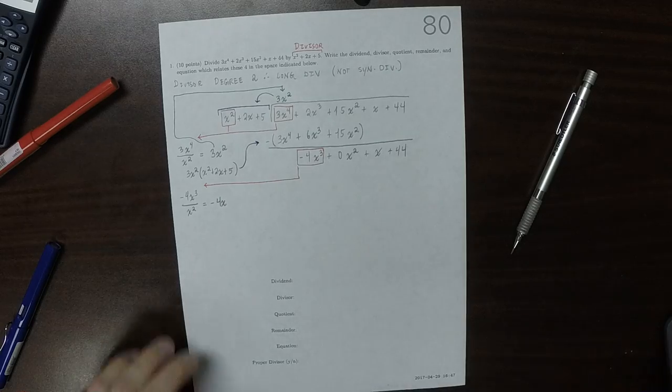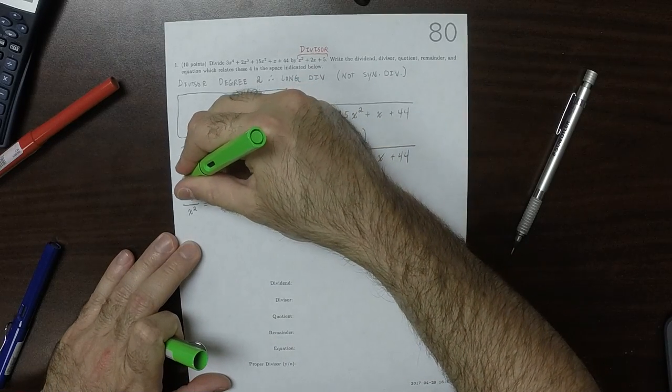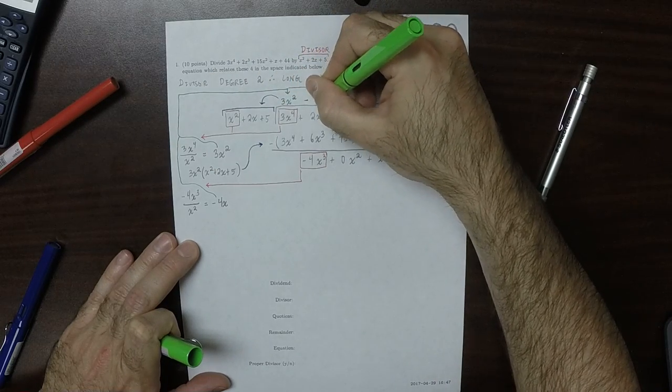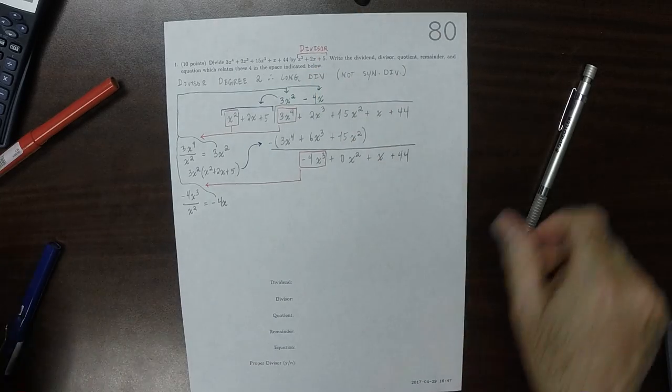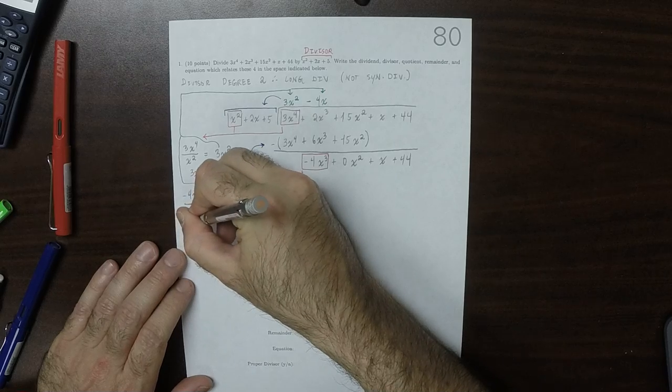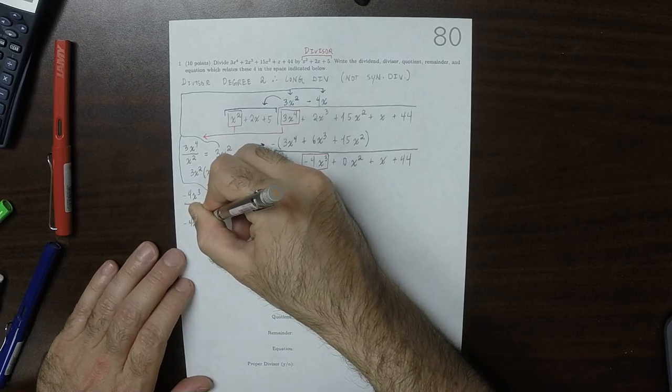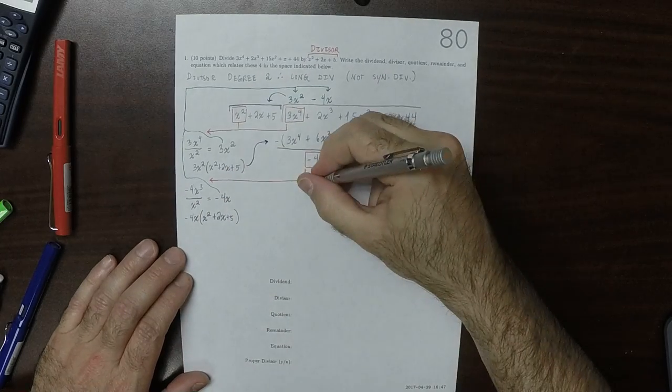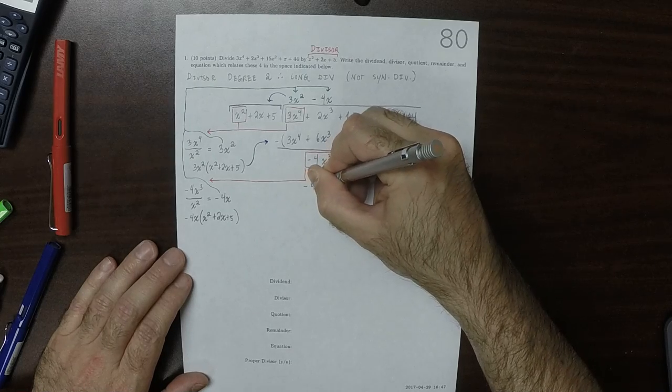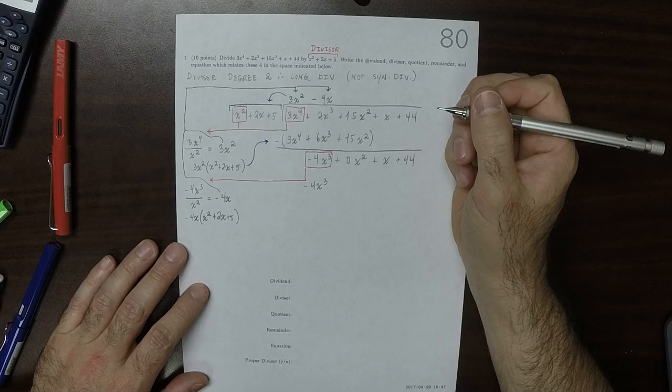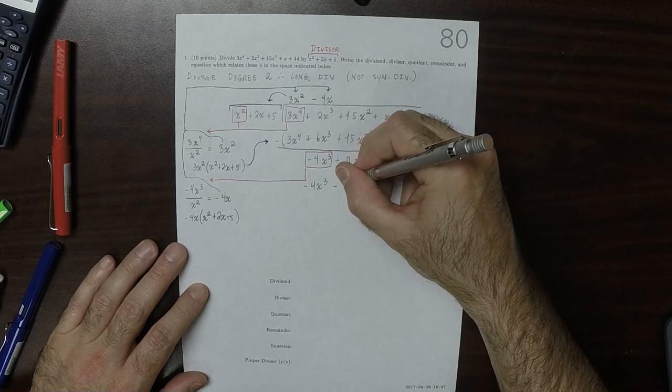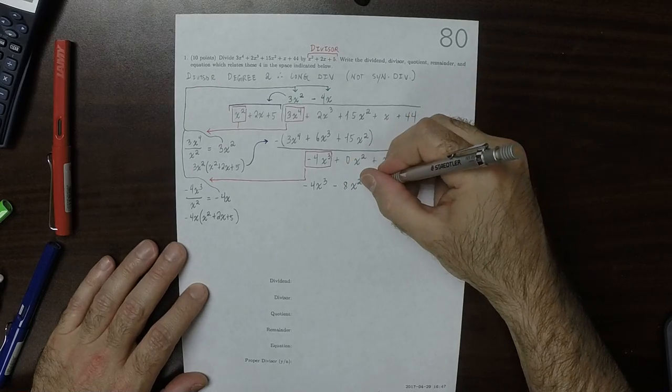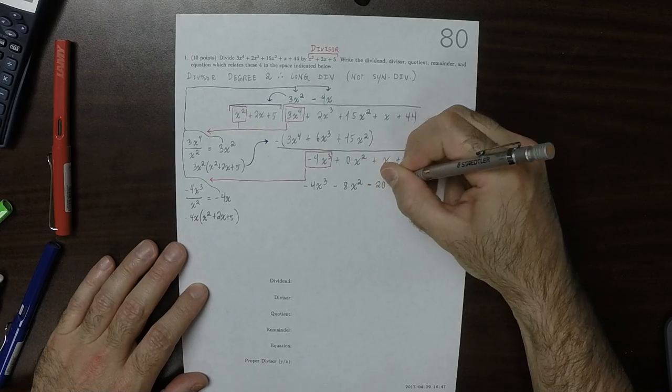Then it hits the divisor on the way down. That product gets written under here. Negative 4x cubed minus 8x squared minus 20x.